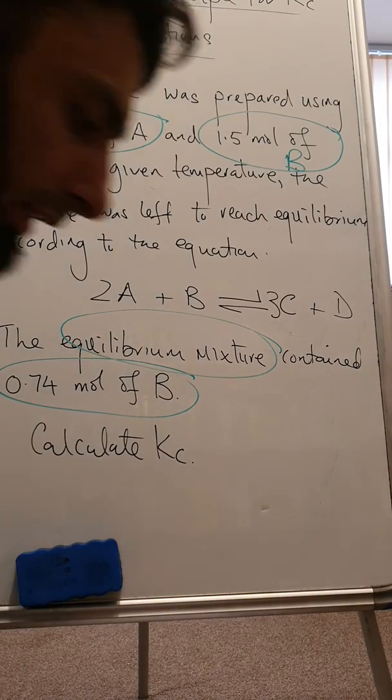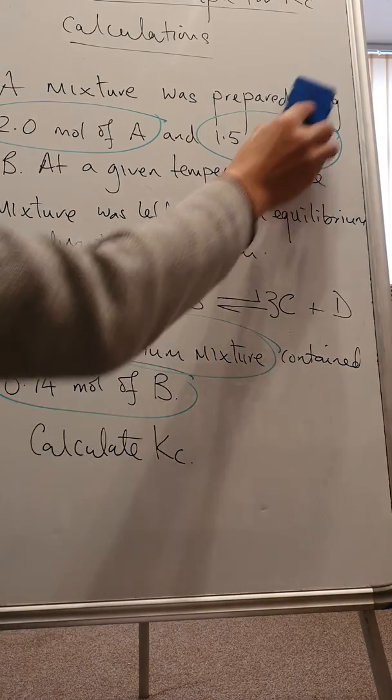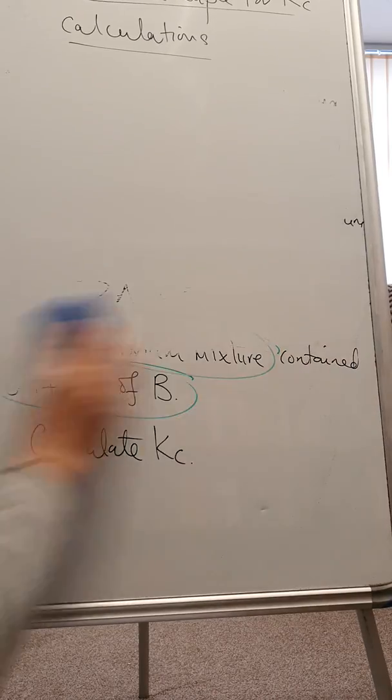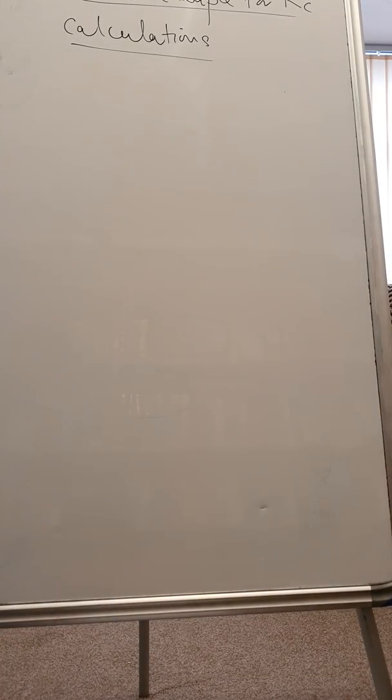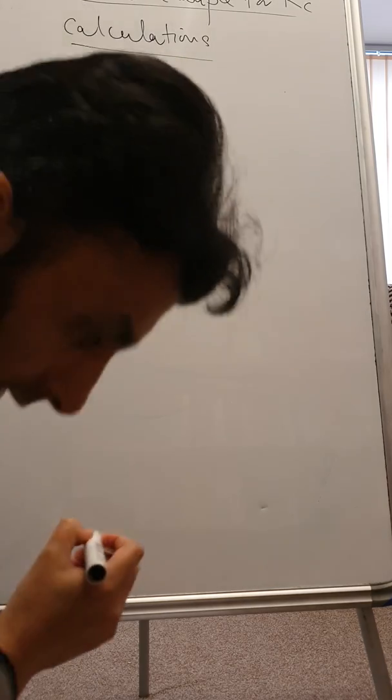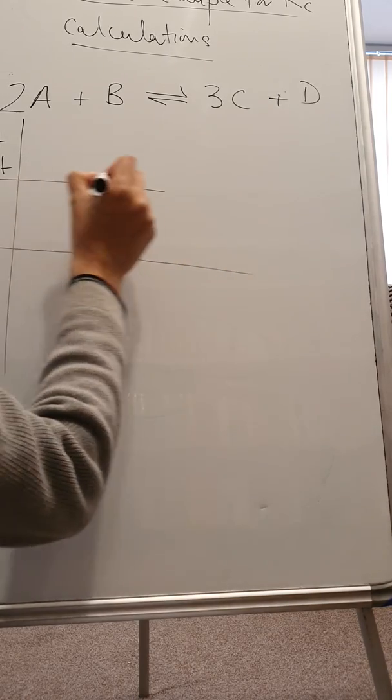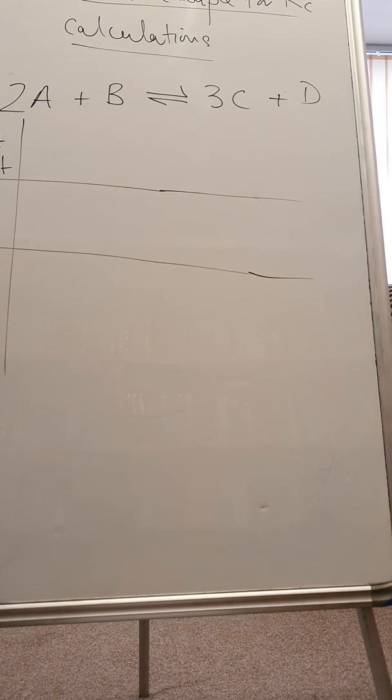Now let's go through the question. I'm going to put this into a table to see what's the easiest way to tackle a question on KC. Let's start with the balanced equation that is given to us: 2A plus B forms 3C plus D. The way I'm going to do my table is start moles, moles reacted, and equilibrium moles.